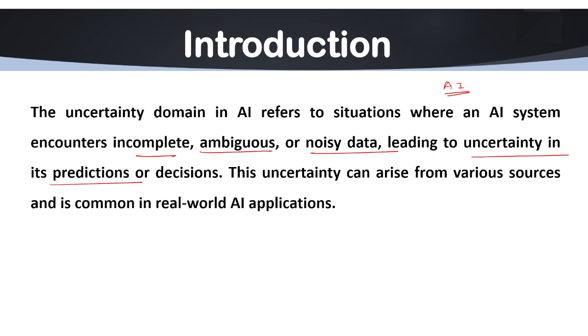In other terms, we can say uncertainty in AI refers to the conceptual space where models operate with incomplete, imprecise, or ambiguous information. Managing this uncertainty is crucial to ensuring the system's reliability, accuracy, and robustness. That's why it is very important to maintain or handle uncertainty in knowledge representation.